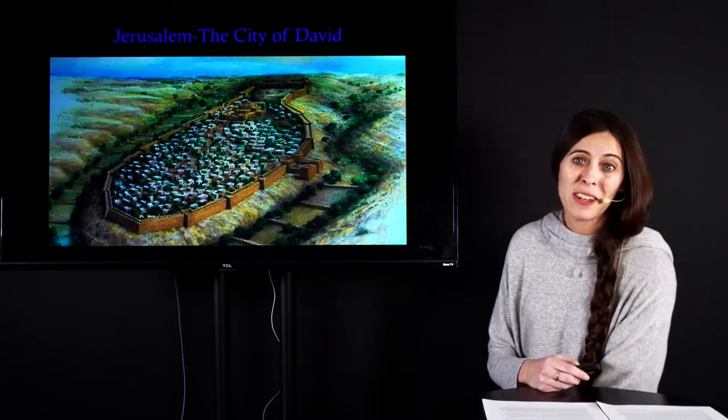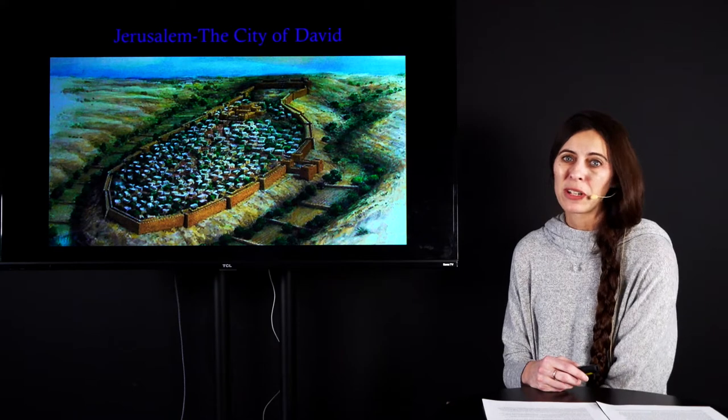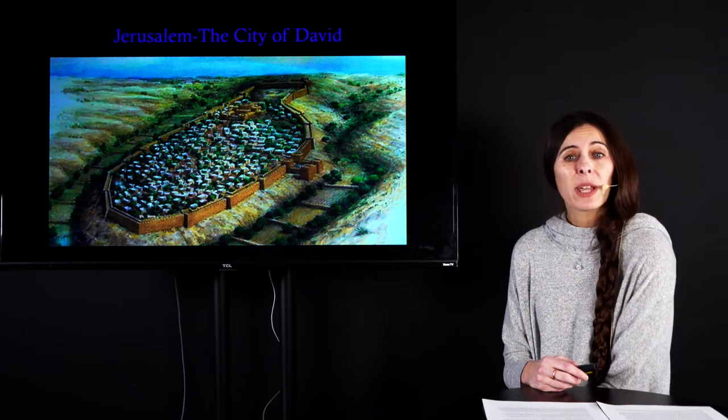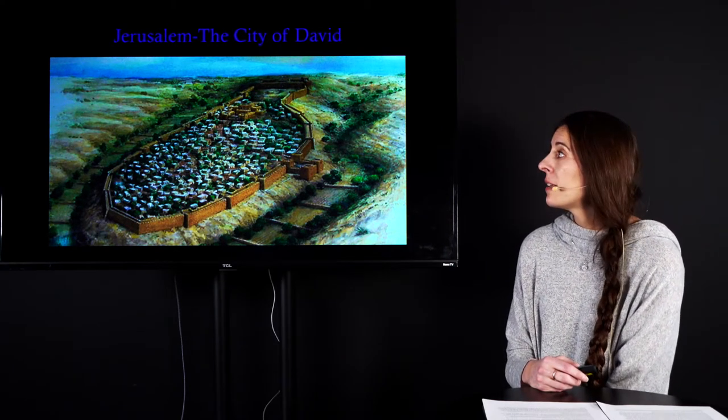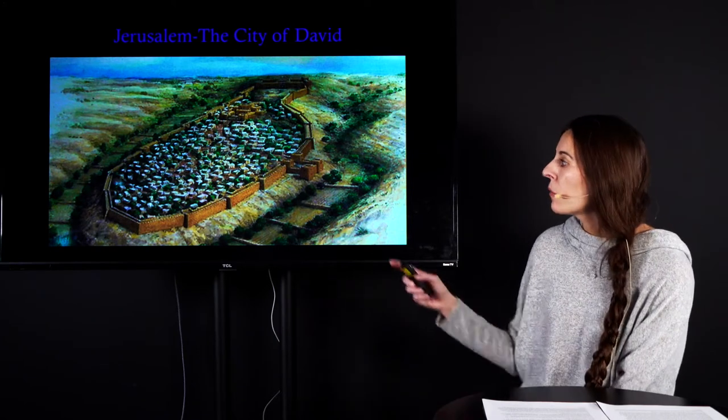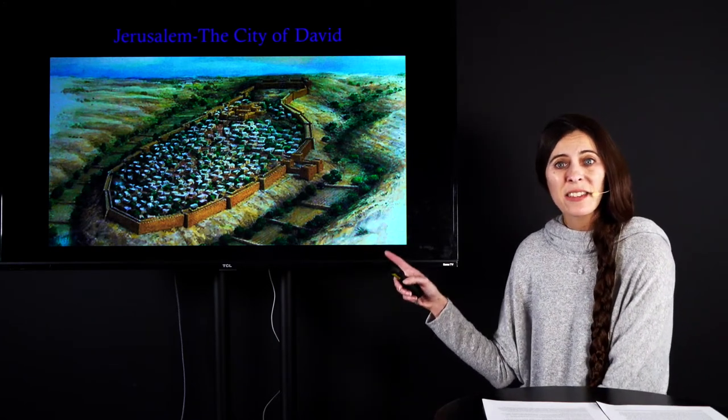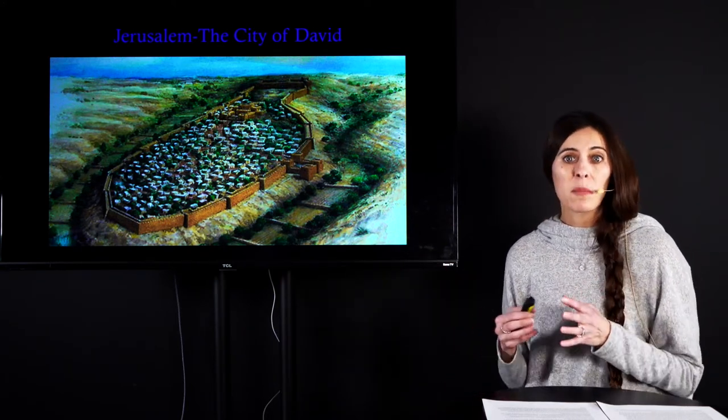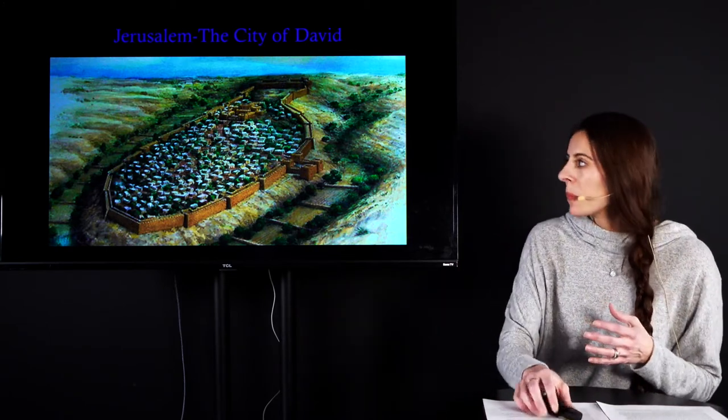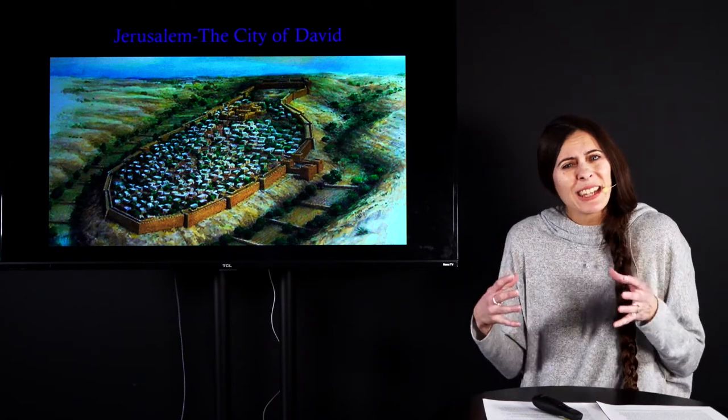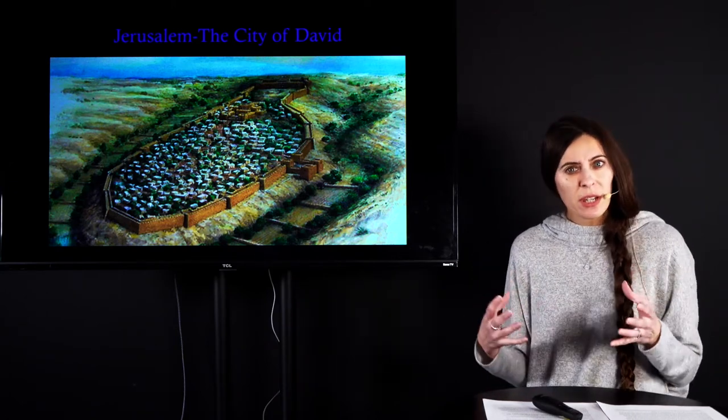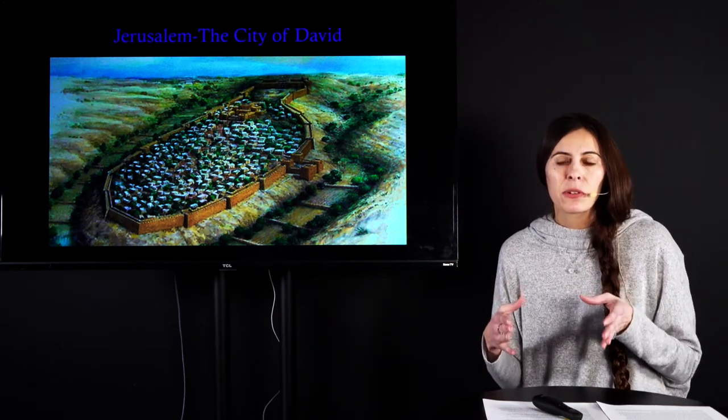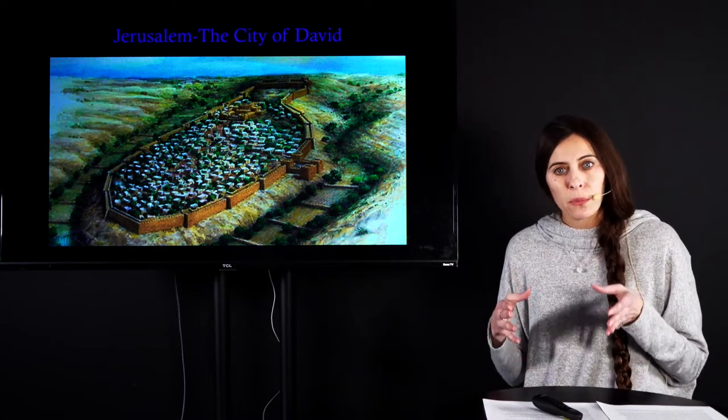So when we encounter David in chapter 6, we are meeting a very successful person. He has the backing of the 12 tribes of Israel. He is being recognized by foreign nations as their king. And he has captured and secured this well-fortified city of Jerusalem. And he has established it now as Israel's capital.